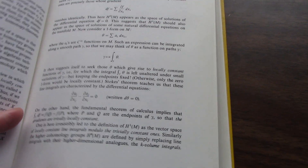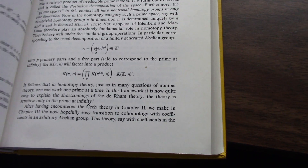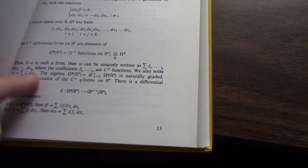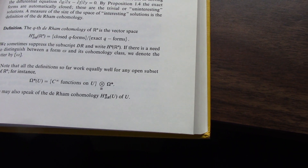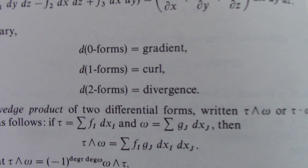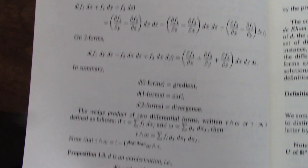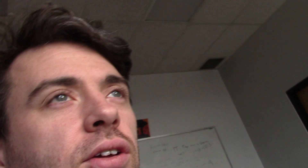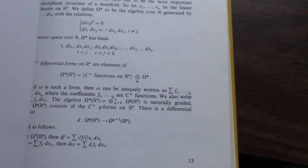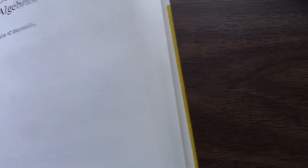Somewhere in the first couple pages it talks about de Rham cohomology of manifolds. Here's an awesome thing: gradient, curl, and divergence are expressed in terms of differential operators in de Rham cohomology, and this is early in the book — page 14. Also, old books — I think it's their glue — it smells so good. Find yourself an old copy; it smells good. Awesome stuff happening early on in the book.